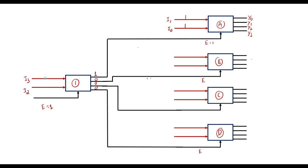If I3=0 and I2=1, then the second output line of decoder 1 will be high, which is connected to the enable of decoder B, so decoder B is active. With inputs I1 and I0: if 0,0 then Y4 is selected; if 0,1 then Y5; if 1,0 then Y6; and if 1,1 then Y7 will be selected.